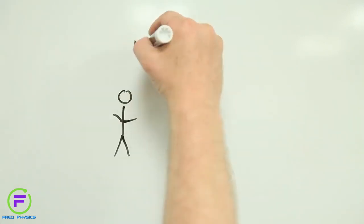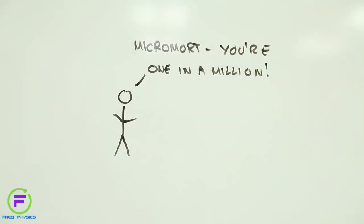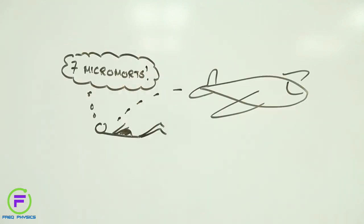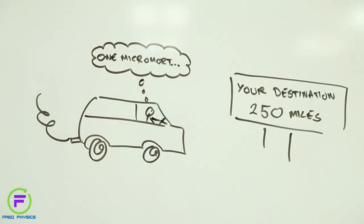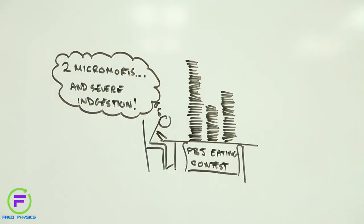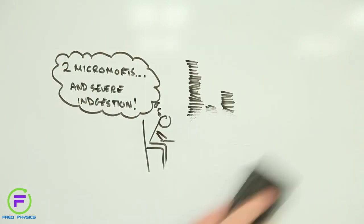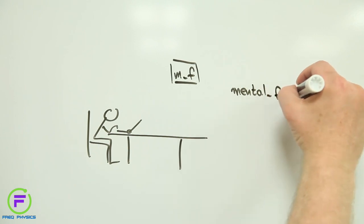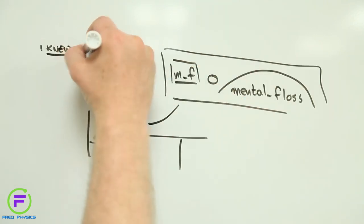One Micromort represents a one-in-a-million chance of you keeling over while doing what you're doing. The more Micromorts, the greater the likelihood of you not being around too long. Micromorts are great if you're worried about your short-term chances of dying. And if you are interested in finding out more about them, I'd highly recommend checking out last week's mental floss video with John Green.